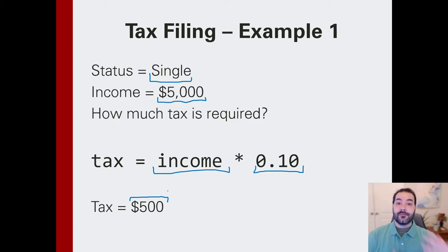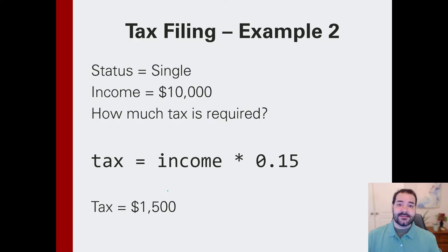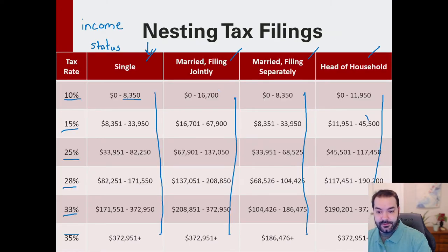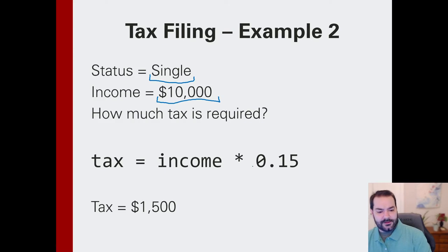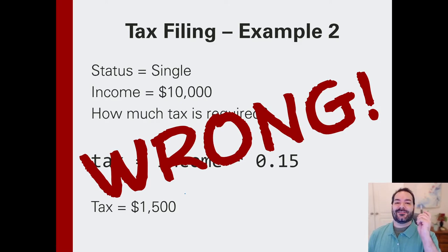Let's bump those numbers up. Let's say you're filing again as single, but you made $10,000. $10,000 is larger than $8,300, so we're up a tax bracket, so we have to then do 0.15. And so now I'm paying $1,500. Wrong! That is not how taxes work. That is incorrect. That is where we think, but that's actually overestimating how much we pay.